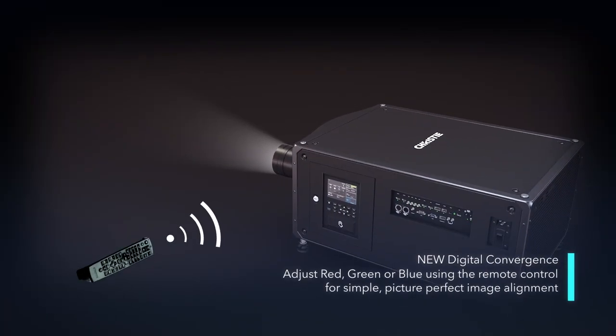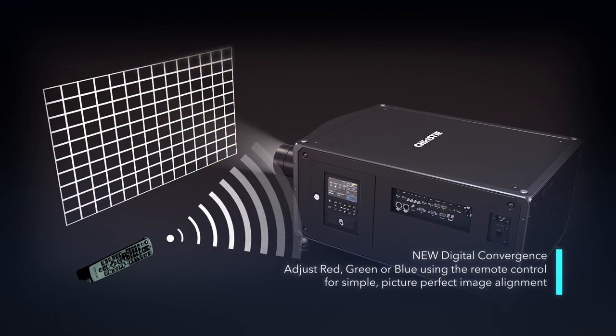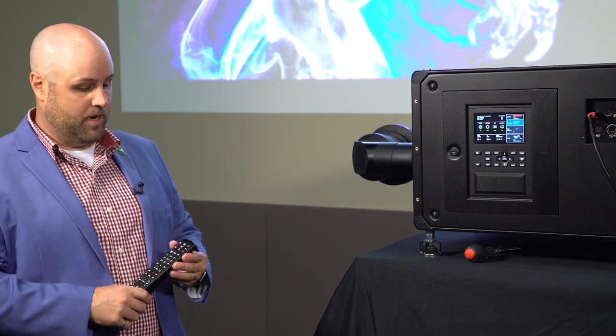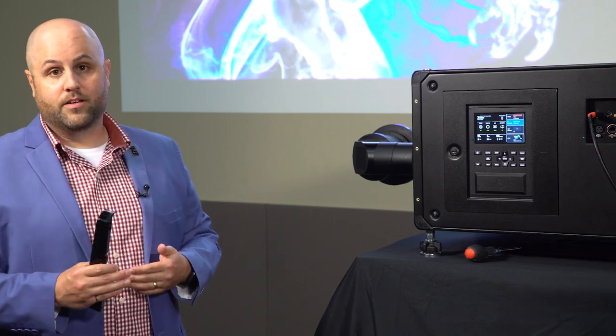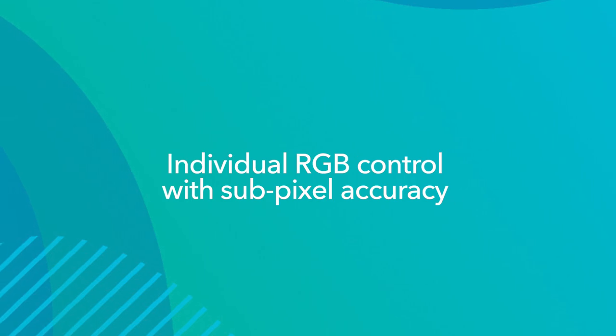But something that we've done to go even further than mechanical convergence is we've actually implemented digital convergence. That allows the customer to simply use the remote to converge the projector. So if this was rigged, for example, and they forgot to tweak the convergence before it went up, they could actually just use the remote and quickly pull in red, green, or blue to sub-pixel accuracy. And can those be controlled individually? Yes.